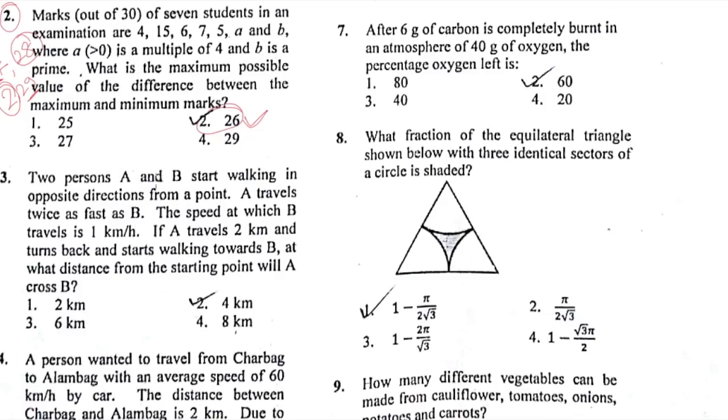This one says persons A and B start walking in opposite directions from a point. A travels twice as fast as B. The speed at which B travels is 1 kilometer per hour. If A travels 2 kilometers, turns back and starts walking towards B, at what distance from starting point will A cross B? This is a usual kind of question asked in CSIR NET exam. The correct answer is option 4. I will upload the complete answer on my Unacademy profile.